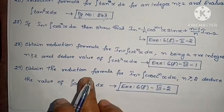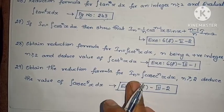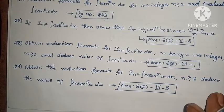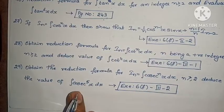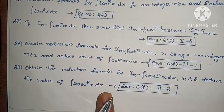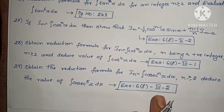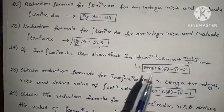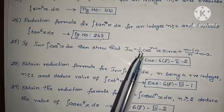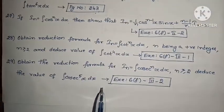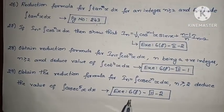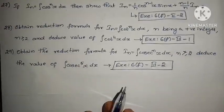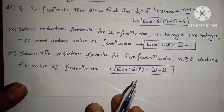Next: obtain the reduction formula for Iₙ = integral of cosecⁿx dx (n ≥ 2) and deduce the value of integral of cosec⁵x dx, exercise 6f, Roman numeral 3, 2nd problem. These reduction formula problems appear frequently in previous question papers as 7-mark (san marks) questions.